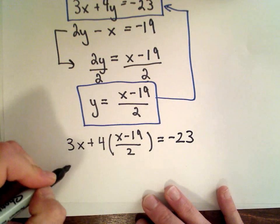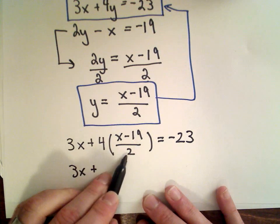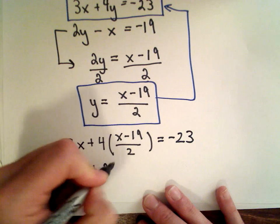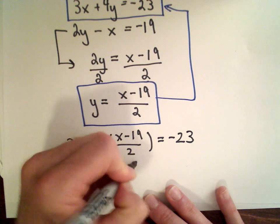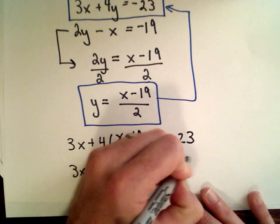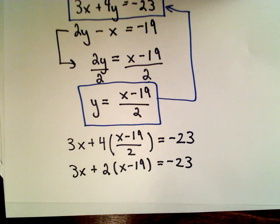So we've got 3x plus—4 divided by 2 would leave me with a 2—so 2 times x minus 19 in parentheses. I've got to distribute, so now it's just a linear equation in one variable.